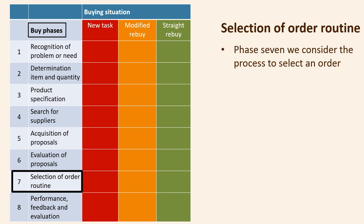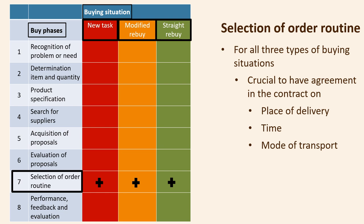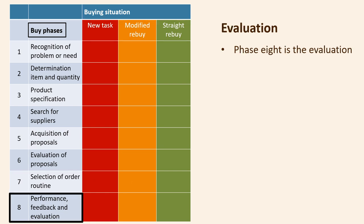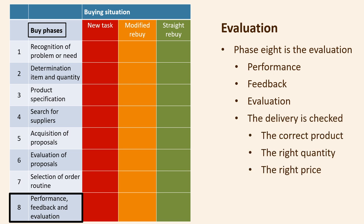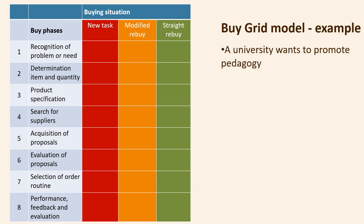In buying phase seven, the order is processed. Practical considerations such as delivery time, place, and possibly transport modes are agreed upon. When specifying orders for all three types of purchase situations, it is crucial to agree on the place, time, and mode of transport in the contract. The last phase, phase eight, is the evaluation phase — performance review, feedback, and evaluation — where the delivery is checked to ensure the correct service or product has been delivered at the right quantity, quality, and price. Evaluation is in the eighth and final phase in all three buying situations.